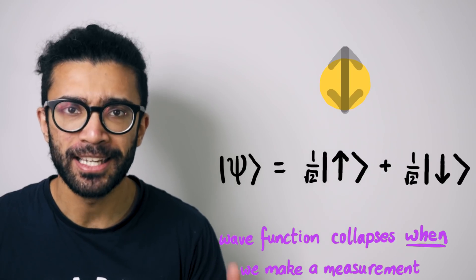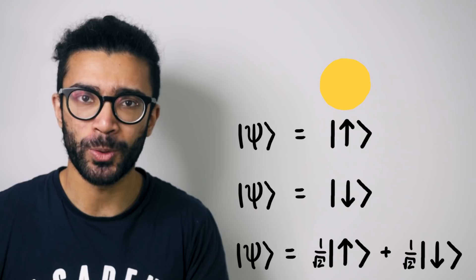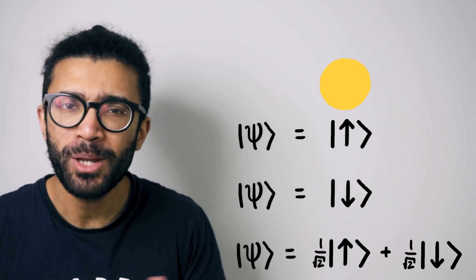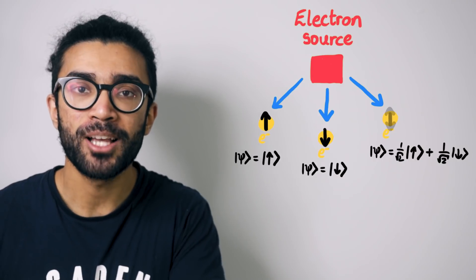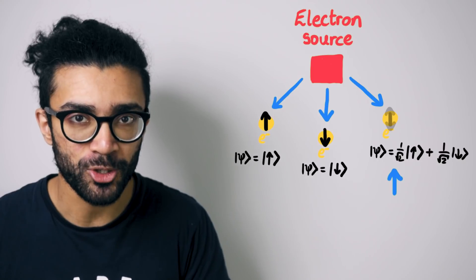We can easily think about an electron in any one of these pure states when we're doing some mathematics and talking theoretically. But in real life, in practice, things are a little bit different. Maybe we have an electron source that spits out electrons in different psi states. In other words, only some of them come out as spin up, only some of them come out as spin down, and some of them come out as a superposition of the two.